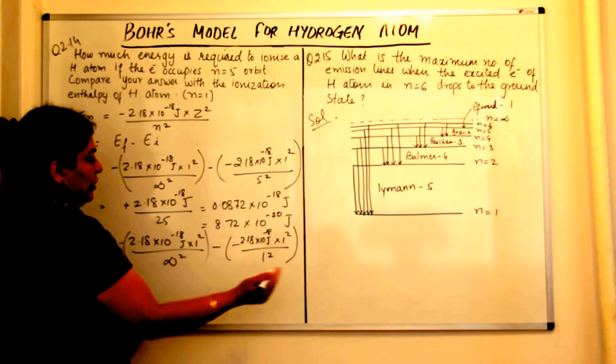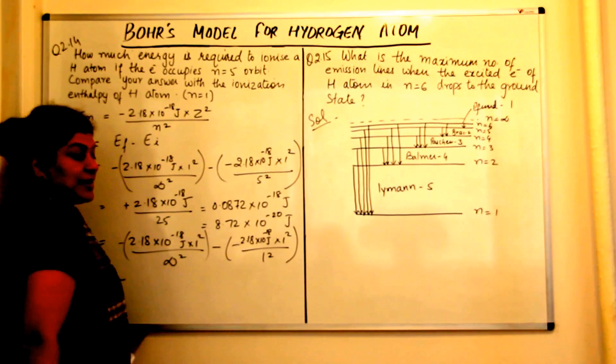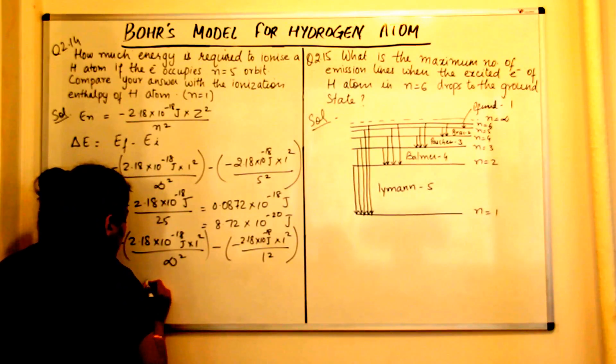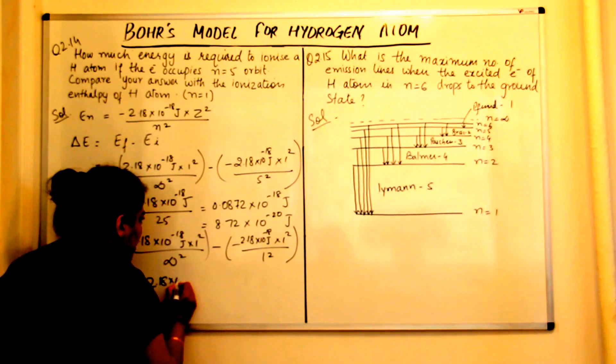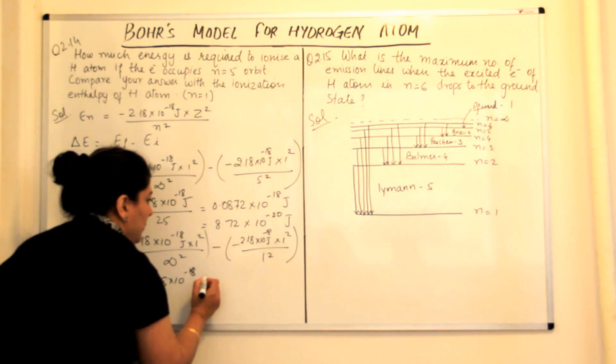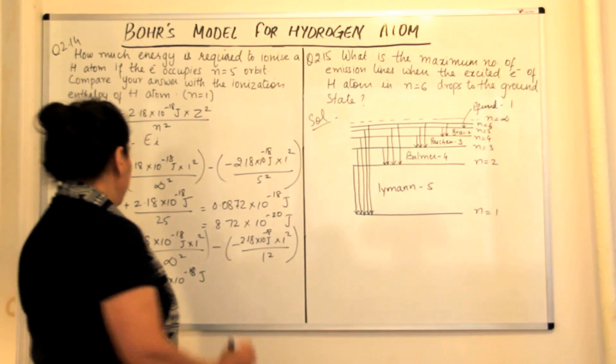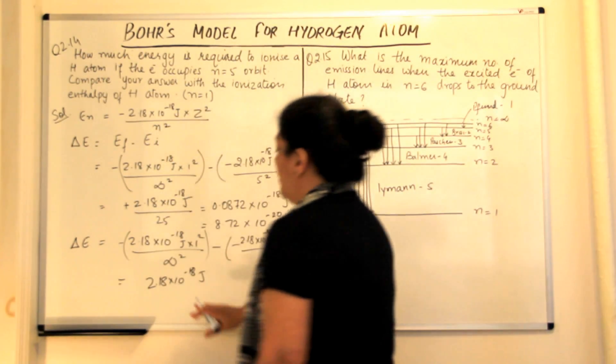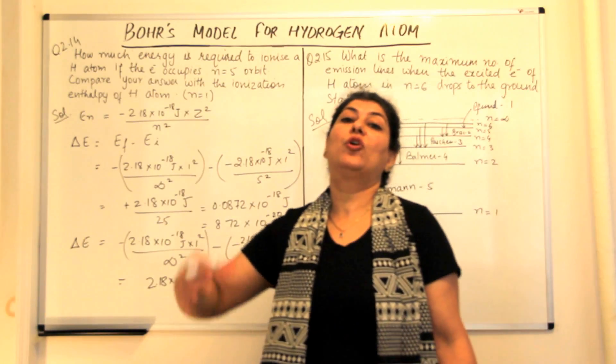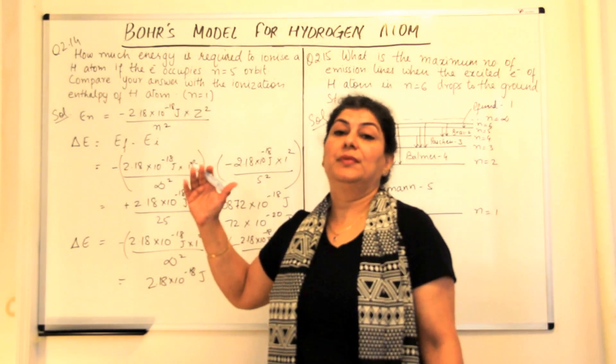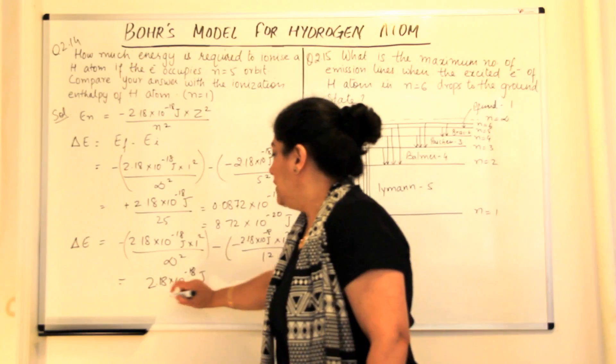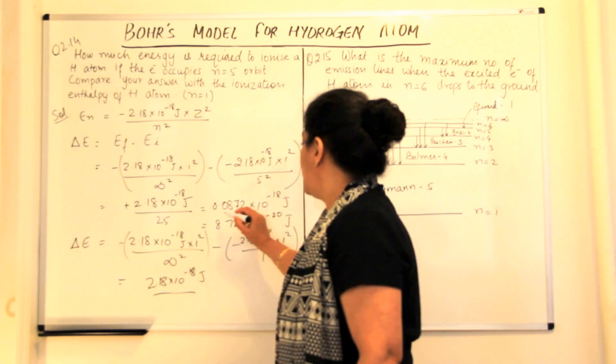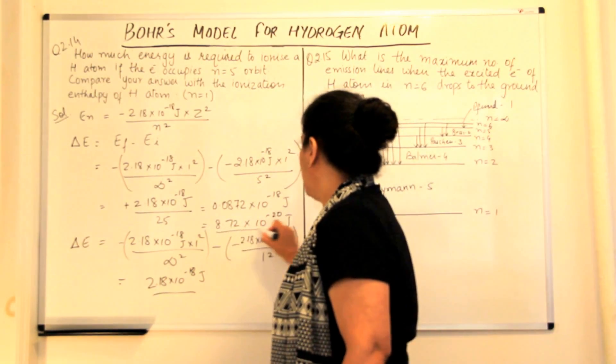This 1 square is 1 only, and the minus minus cancels out. Therefore, the energy would be 2.18 into 10 to the power minus 18 joules, which is the energy required to pull out an electron completely or to ionize an atom of hydrogen. So this was the ionization enthalpy.